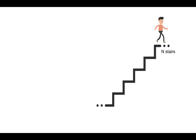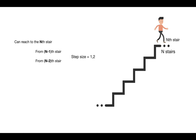Now let's think about the solution. If we have reached the end stair, we must have come from either the n minus one step or the n minus two step, because the step sizes are one and two. So the total number of ways to reach the nth stair is the sum of ways to reach the n minus one stair and ways to reach the n minus two stair.